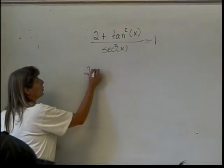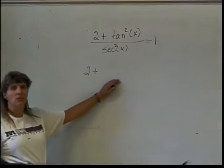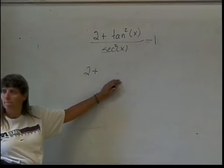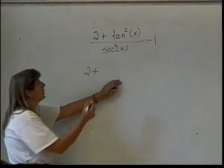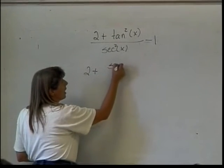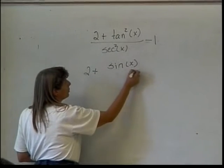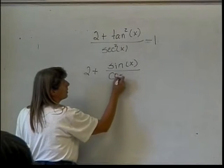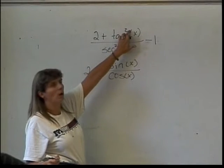This will then become 2 plus, well, if I change my tangent, what will it become? The tangent is the sine of x divided by the cosine of x. Now, this tangent was squared.